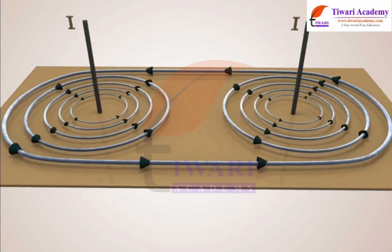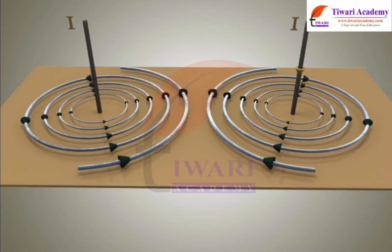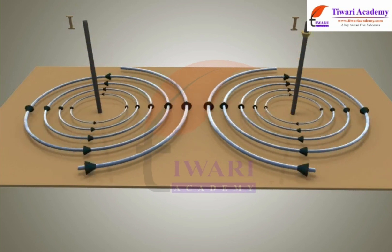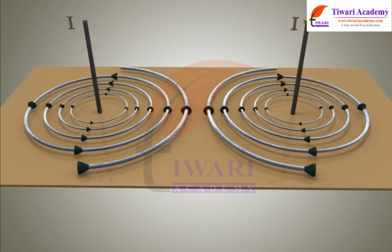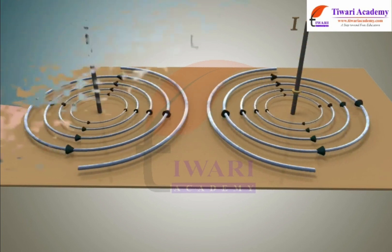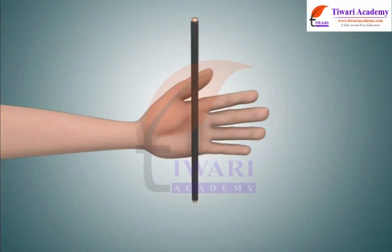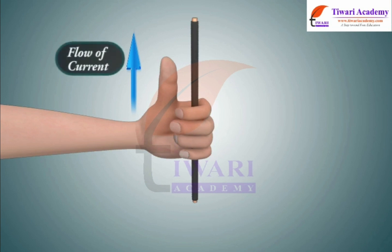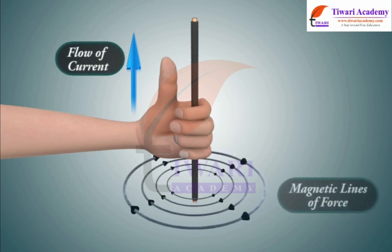If we pass current through a conductor through a cardboard, we get magnetic lines that are all closed circles concentric with the conductor. If we reverse the current and repeat the experiment, we again get closed circular magnetic lines concentric with the conductor. If the current-carrying conductor is held in the right hand so that it is encircled by the fingers, with the thumb pointing in the direction of current flow, then the fingertips will point in the direction of the magnetic lines of force.